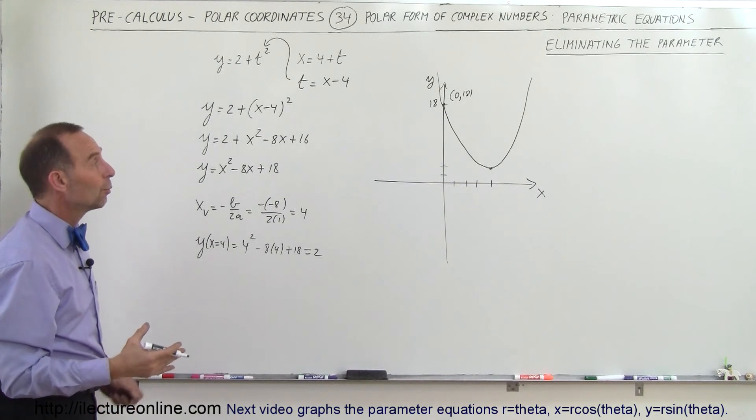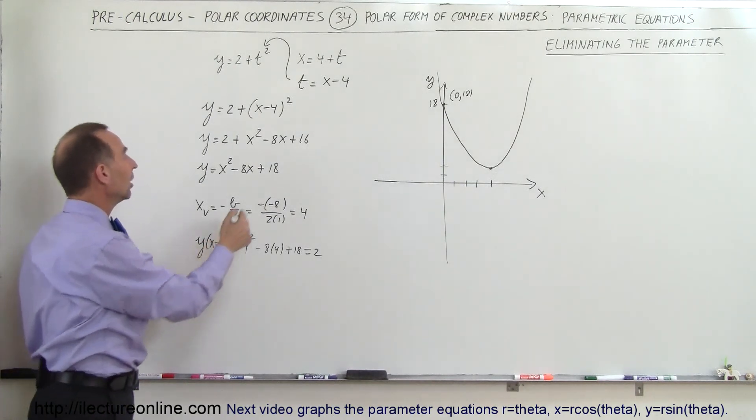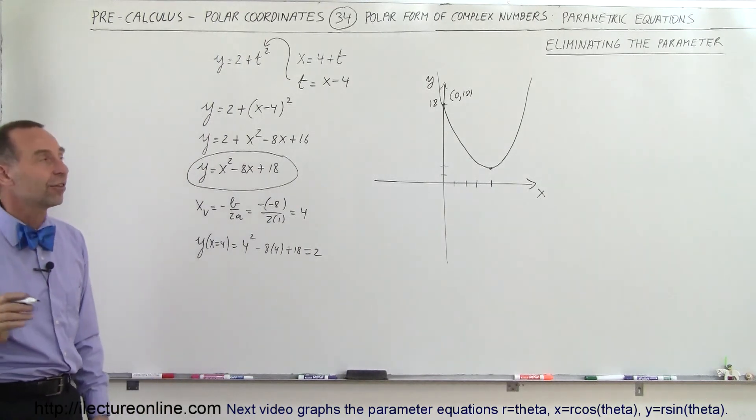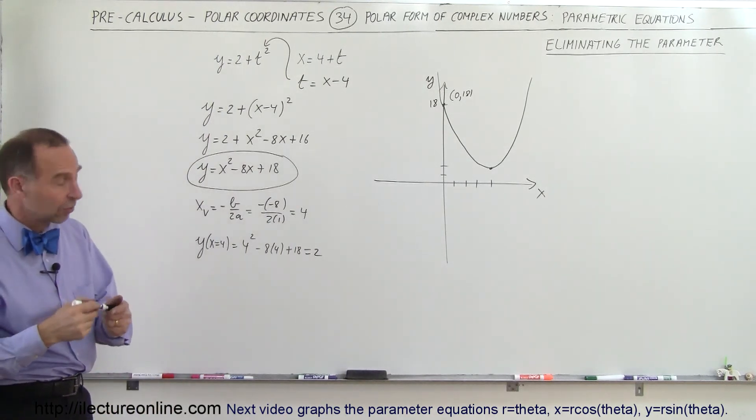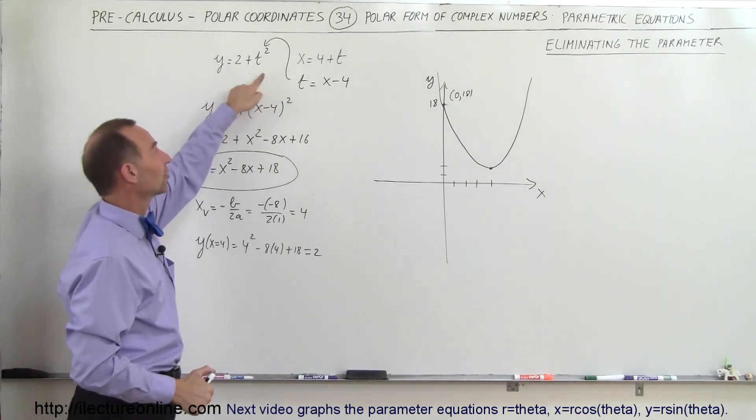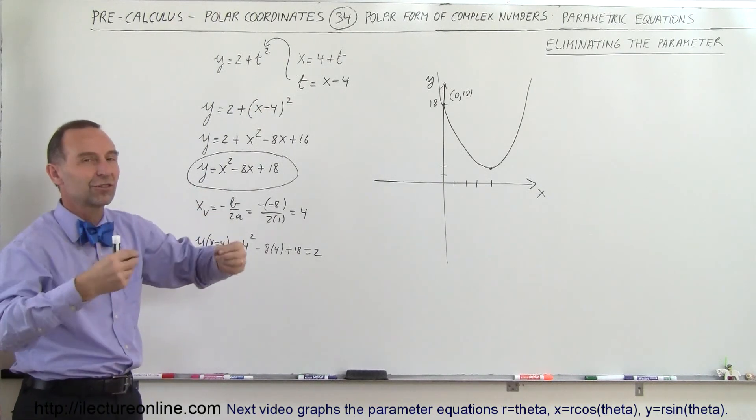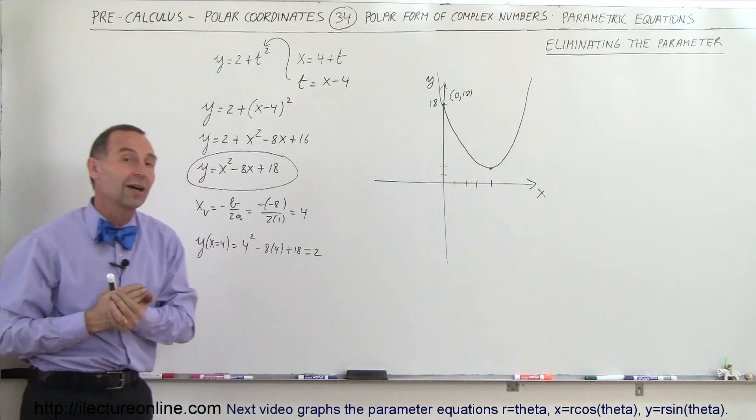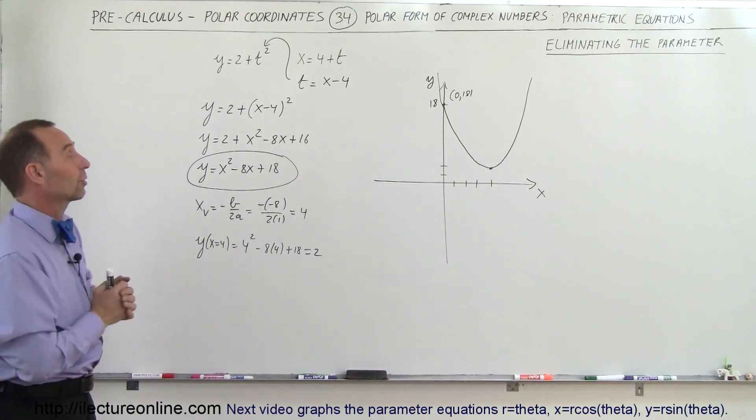By eliminating the parameter, we have been able to come up with an equation that describes the position of the particle but not as a function of time. If we want to have it as a function of time, we keep the two parametric equations. We plug in values for t to get x's and y's, and then we know where the particle will be as a function of time. That's why we have parametric equations.